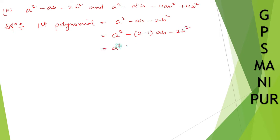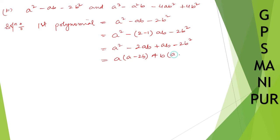So a square minus 2ab plus ab minus 2b square. Taking a common from the first two terms gives a(a minus 2b), and taking b common from the last two gives b(a minus 2b). So the first polynomial factors as (a + b)(a minus 2b).